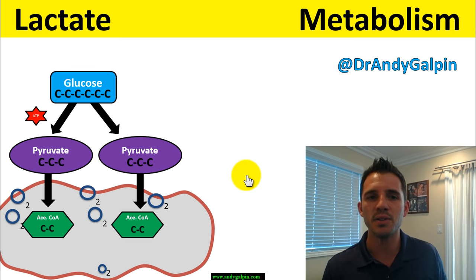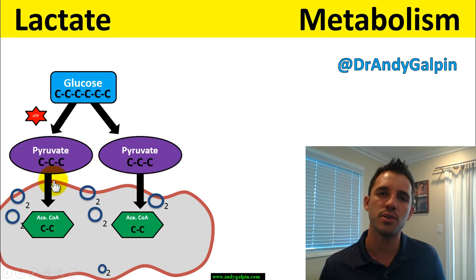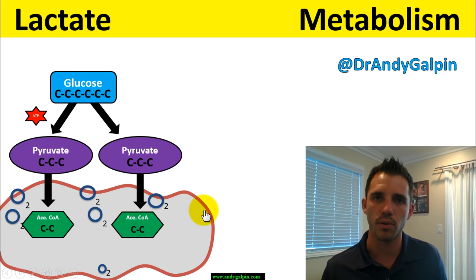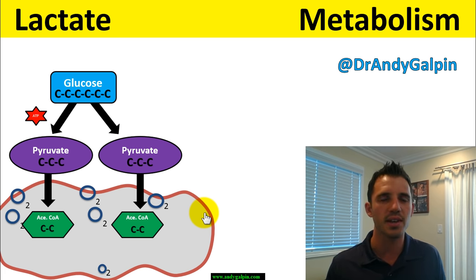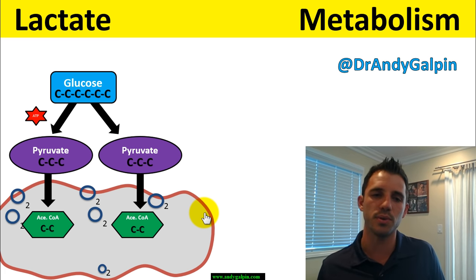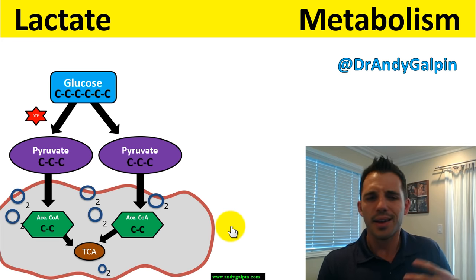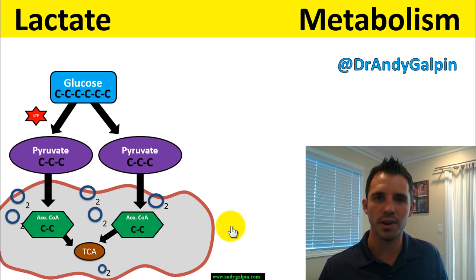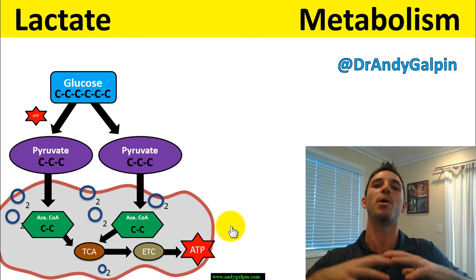We'll take this pyruvate, ship it into the mitochondria — this red little blobby thing — and convert it into molecules called acetyl-CoA. Each one of these acetyl-CoA molecules is going to get a spin through what some folks call the citric acid cycle or TCA cycle. That system generates stuff that gets sent to the electron transport chain, or ETC. The point is it eventually generates a bunch of ATP — which is what we're really working for.